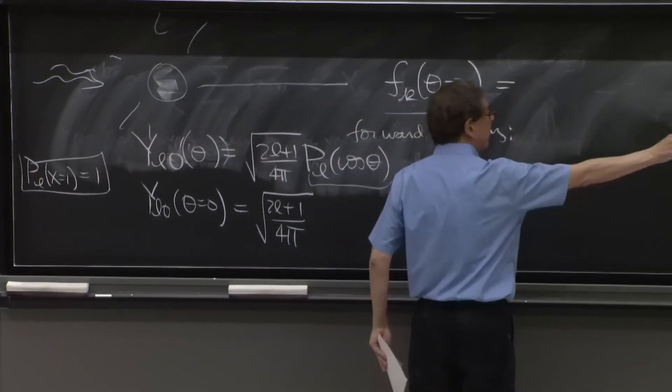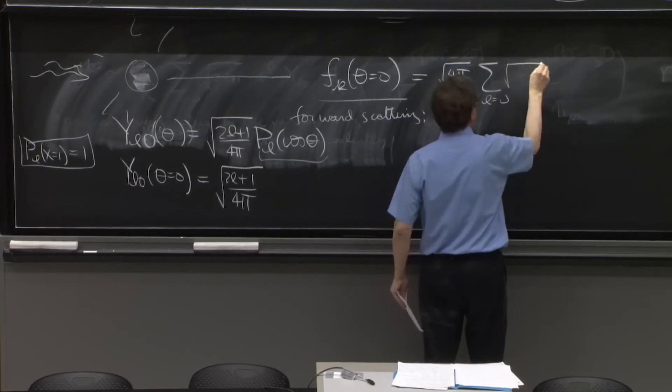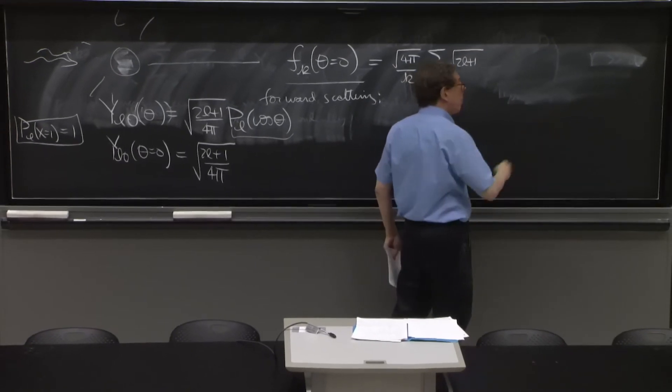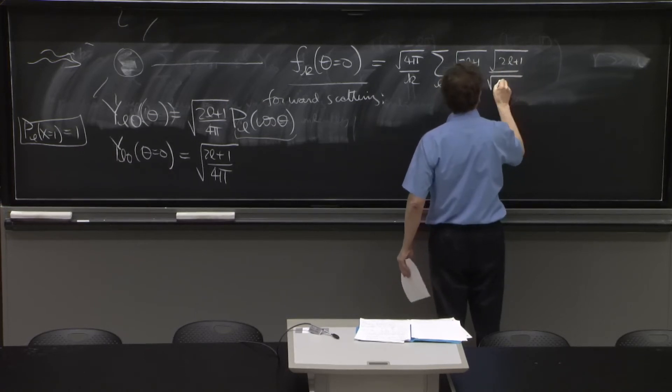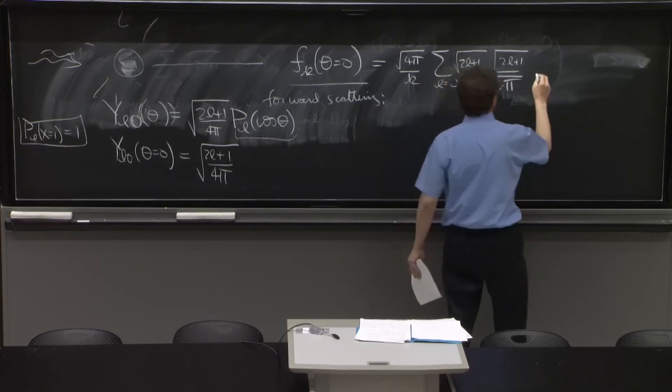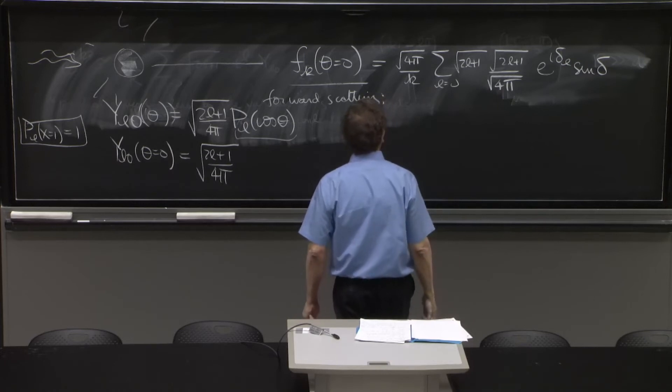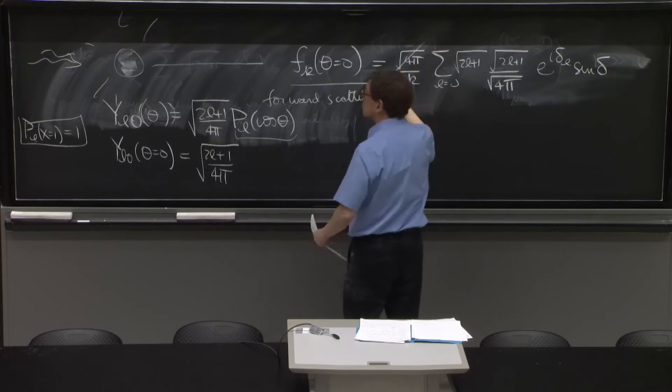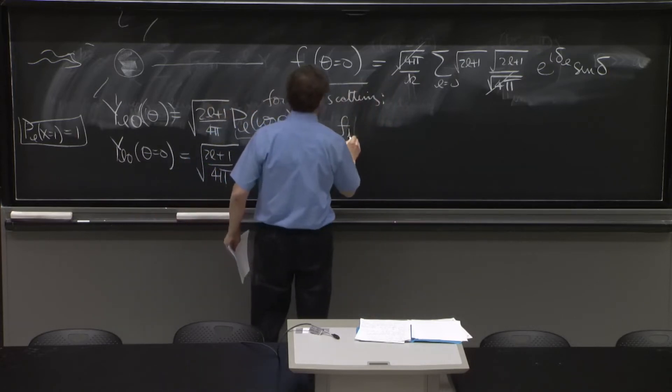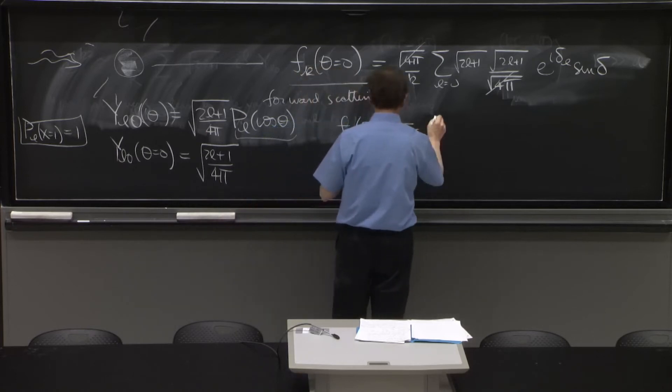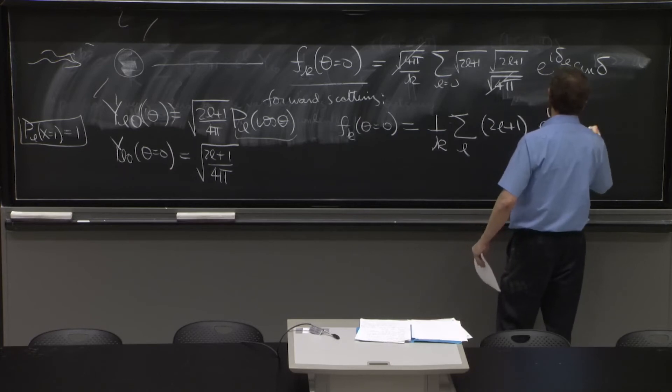So that's the spherical harmonic in the forward direction. So you have here from that formula on the right, 4 pi over k, sum from L equals 0. This is an investigation of what happens to the forward scattering amplitude. The y L0 gives you another square root of 2L plus 1 and a square root of 4 pi as well. And then you get e to the i delta L sine delta. So look here, here, here, and these factors simplify. So fk of theta equals 0 is 1 over k sum of L, 2L plus 1, e to the i delta sine delta.